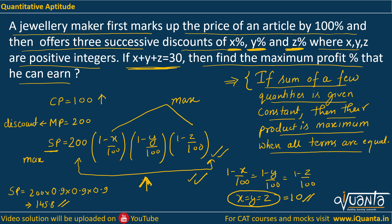This will be the maximum SP at 145.8, and the CP is 100. So the profit is 45.8 rupees on a CP of 100, giving a maximum profit percent of 45.8%. This is the final answer.